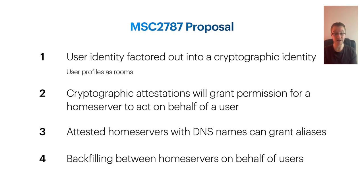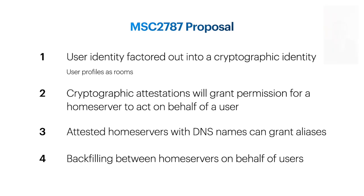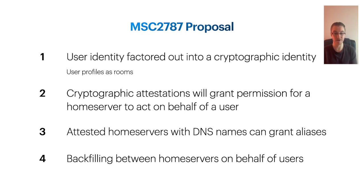So in MSC 2787, our proposal is that a user identity will be a cryptographic keypair, and the user will be able to use this keypair not just to prove their identity to a home server, but also to sign attestations that grant home servers to act on behalf of that user for a specific amount of time. What I mean by 'act on behalf of' is that the home server will be authorized to send messages into the room for a user, handle invites, and things that a regular home server would do today on behalf of its registered users. A user will be able to choose to not renew an attestation at any time, at which point the home server will lose its power to act on that user's behalf — for instance, if it was discovered to be malicious or the user changed their mind about where they want their data held.